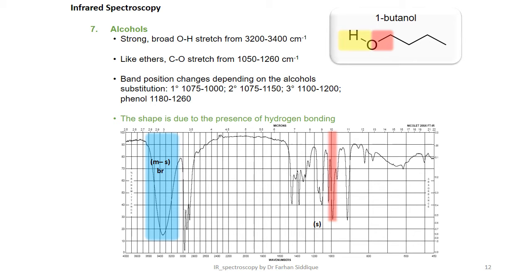In alcohols, strong broad O-H stretch is seen from 3200 to 3400 cm⁻¹ and like in ether, C-O stretch from 1050 to 1260 cm⁻¹. Band position changes depending upon the alcohol substitution, whether it is primary, secondary, tertiary or phenol.